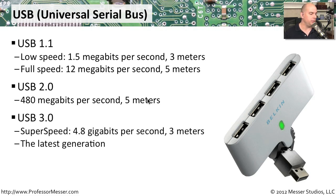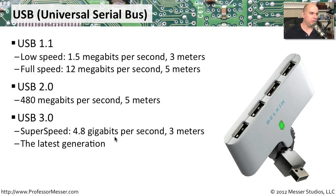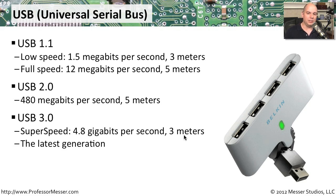The latest version of USB is USB 3.0. We're starting to see USB 3.0 devices roll out. That's something called super speed, and it runs at 4.8 gigabits per second — a significant increase over the slower 480 megabits in USB 2.0. But notice that the distance of the cable is a little bit shorter; your maximum distance is about three meters.